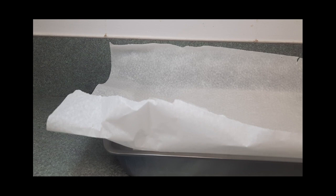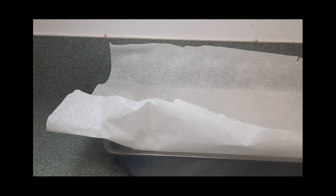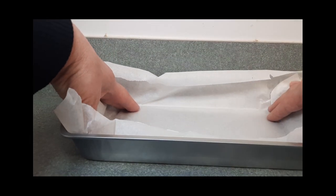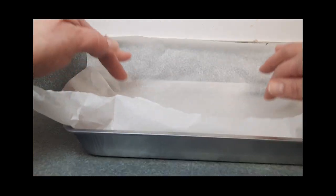The next thing we want to do is line an eight by eight baking dish with parchment paper, or it can be something a little bit smaller, whatever you have. The parchment paper is not staying down because there's nothing in it right now, so we're going to leave it like that.